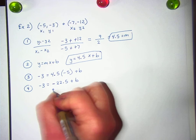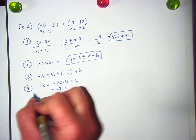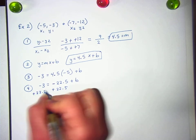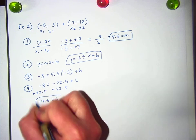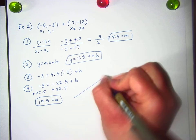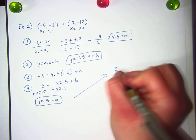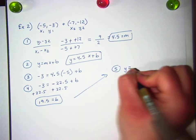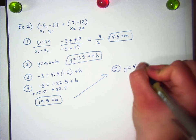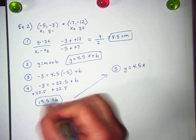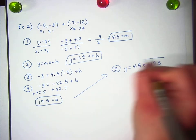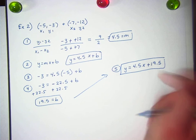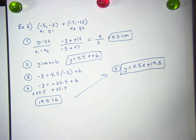And then to get rid of that negative 22 and a half, I'm going to add it to both sides, which makes 19 and a half, everybody's favorite number. So our final answer for step 5 is y equals, I'm going to fill in the slope, 4.5x, and then the b is 19.5. So that would be a line that has a y-intercept of 19 and a half and a slope of 4.5. Not bad at all.